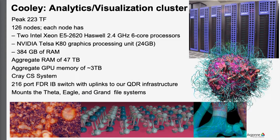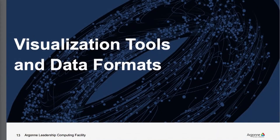I mentioned I'd talk about resources. You may be familiar with Cooley, our visualization analytics cluster — it's a 126-node cluster with Nvidia K80 GPUs and significantly 384 gigabytes of RAM, so it has lots of memory. Importantly, it shares file systems — the data file systems Eagle and Grand, the three Lustre file systems — with the big resources. So when you're done running your simulations and saving your data to disk, you don't need to move that data; you can use Cooley to load it back in and do your visualization and analysis.